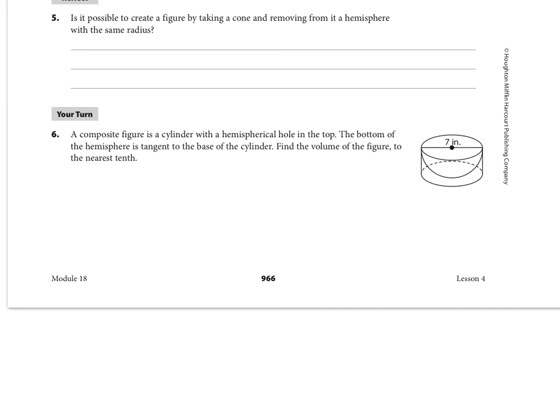In this composite figure, we have a cylinder with a hemispherical hole in the top, we're told. Notice that the value that is centered around the middle of that hemisphere is going to be representing your diameter, so be careful with that. But notice, just like with the composite problem that we just did, the radius of the hemisphere is exactly the same as the radius of the cylinder. So see what you can do working with that.